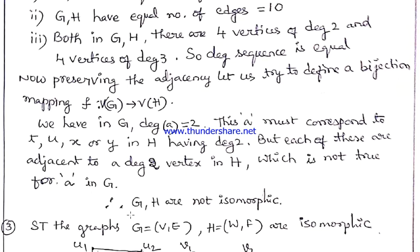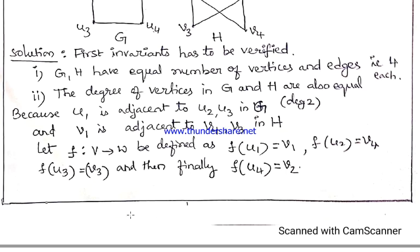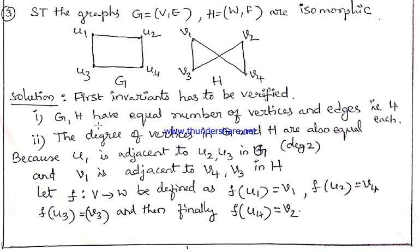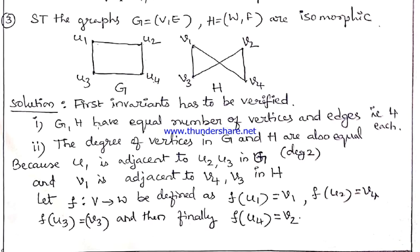Now let us see the third example: show that graphs G and H are isomorphic. As usual, we check the three invariants first. Both graphs have equal number of four vertices and four edges. Also the degree sequence is equal in the two graphs — there are four vertices of degree 2 in each graph. So the three invariants hold.